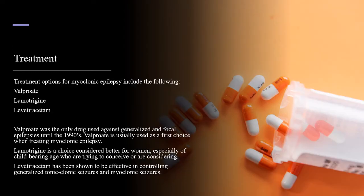Treatment options for myoclonic epilepsy include valproate, lamotrigine, and levetiracetam. Valproate was the only drug used against generalized and focal epilepsies until the 1990s, and is usually used as a first choice when treating myoclonic epilepsy. Lamotrigine is a choice considered better for women, especially of childbearing age who are trying to conceive. Levetiracetam has been shown to be effective in controlling generalized tonic-clonic seizures and myoclonic seizures.